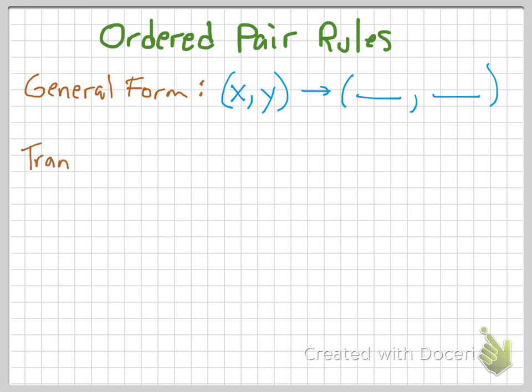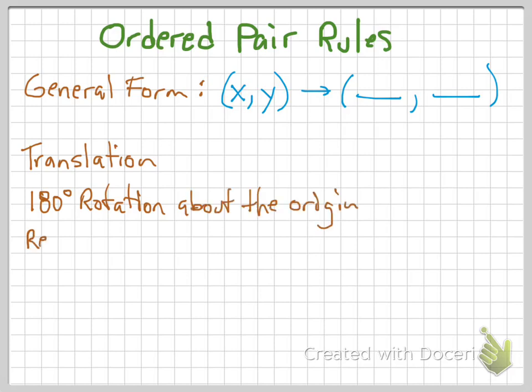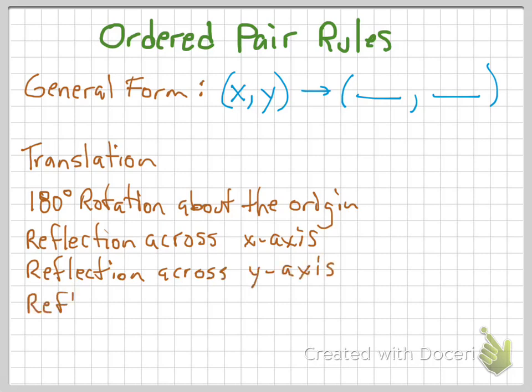Now if you look at this general form, there were five cases that we looked at. One was translation, one was a 180 degree rotation about the origin, the third one was reflection across the X axis, there was reflection across the Y axis, and there was reflection across the line Y equals X. So you should have those in your notes. If you don't, pause it here, make sure you get placeholders for that, and when you get back to the classroom, go look up those general form equations so that you have them in your head.